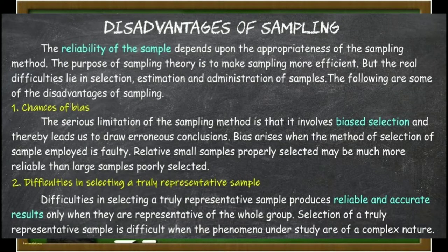The reliability of the sample depends upon the appropriateness of the sampling method. The purpose of sampling theory is to make sampling more efficient, but the real difficulties lie in selection, estimation, and administration of samples. Here are some of the following disadvantages of sampling.